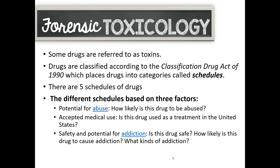Some drugs are referred to as toxins. Drugs are classified according to what we call schedules. In 1990, something called the Classification Drug Act of 1990 was produced. It has since changed names and is now called the Controlled Substances Act. You can search either name, but for the most recent information search the Controlled Substances Act. Both place drugs into categories. There are currently five schedules of drugs — this changes over time. At the recording of this video, there are five schedules, and they are based on three different factors.